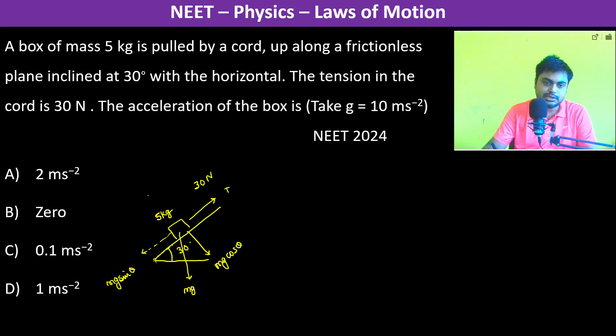Now, this mg cos theta gets balanced by the normal force. Therefore, we can write N is equal to mg cos theta, and this mg sin theta is acting downward.